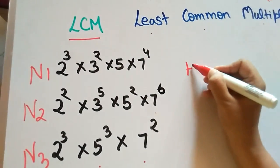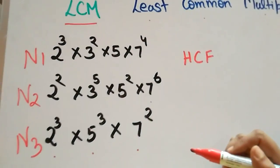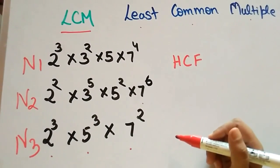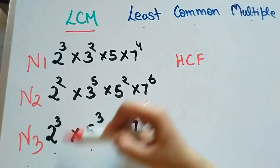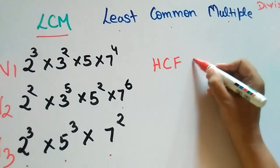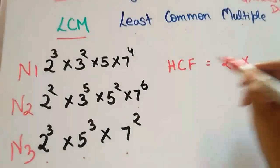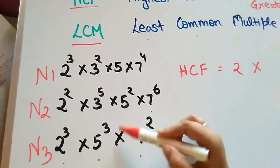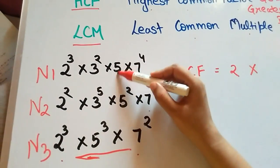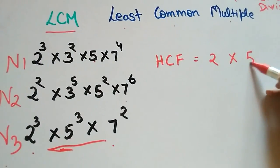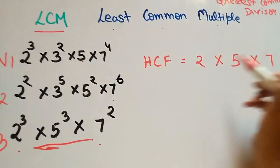So let's see what is the HCF of all three numbers. HCF is the highest common factor. So let's see the common ones. 2 is common in all, so just write 2. We will see the power at the end. 3 is common in all? No, 3 is not in N3. 5 is common in all, so write down 5. 7 is common in all three, so write down 7. Now let's see the power.